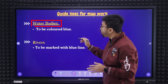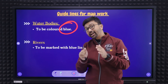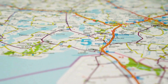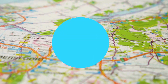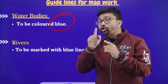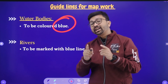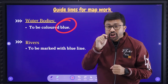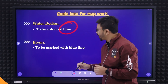Water bodies need to be marked with blue color. Water bodies means lakes as well as river lines — everything you need to mark with blue color. For the river line, remember that it will already be marked on the map in black, but in the exam you just need to highlight the river line with blue color.